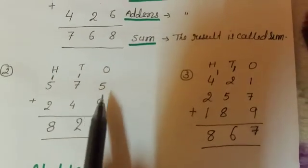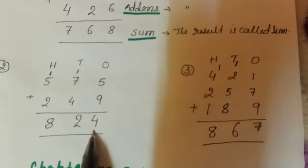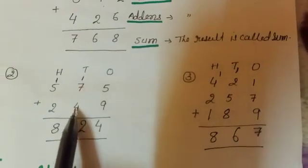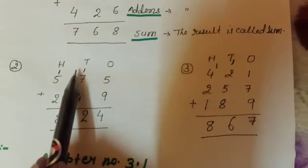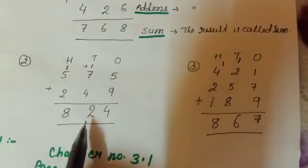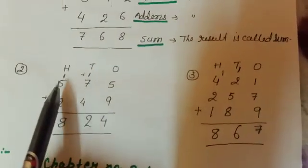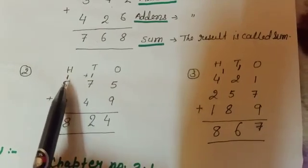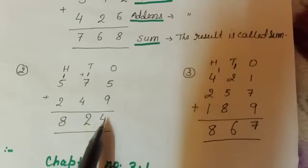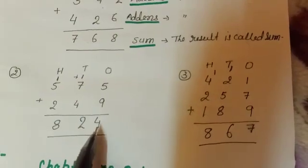See, 5 plus 9 is equal to 14. We write here 4, 1 carry over. 7 plus 4 is equal to 11, and this 1 we add. The answer is 12. We write here 2, 1 go to the hundreds. 1 plus 5 plus 2 is equal to 8. The sum of given question is 824.